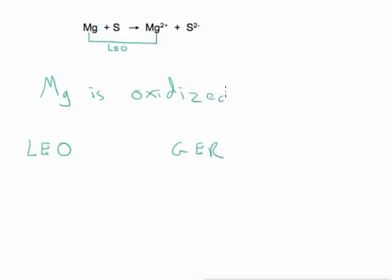The sulfur goes from neutral to minus 2. That is gaining electrons, so sulfur is reduced. They are always going to happen in a pair.